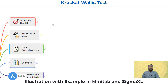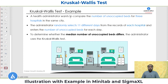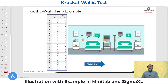Now, after understanding when to use the Kruskal-Wallis test, its hypotheses, and data considerations, let's perform the test with a practical example. A health administrator wants to compare the number of unoccupied beds for three hospitals in the same city. The administrator randomly selects 11 different days from each hospital's records and enters the number of unoccupied beds for each day to determine whether the median number of unoccupied beds differ. This data includes beds from each hospital for 11 days.